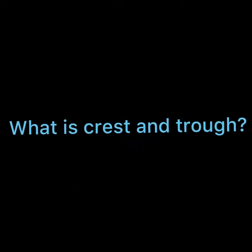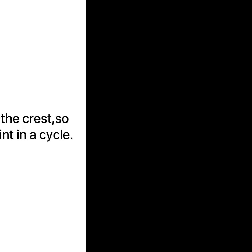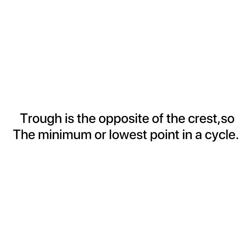A crest is a point on a wave with the maximum value of upward displacement within a cycle — it is the point where the displacement of the medium is at the maximum. A trough is the opposite of the crest — the minimum or lowest point in a cycle.